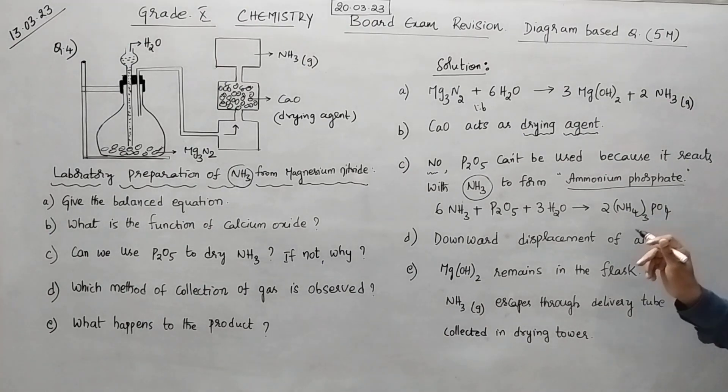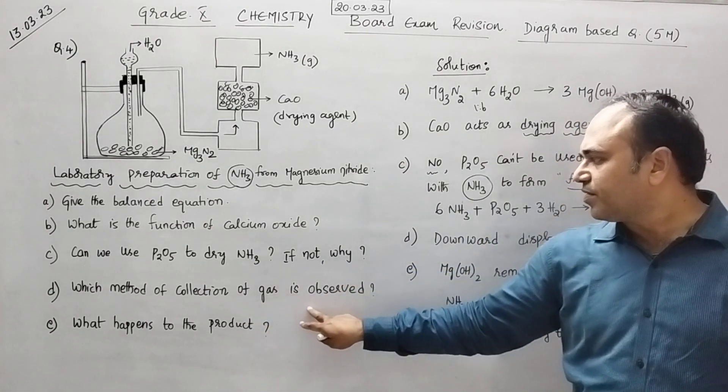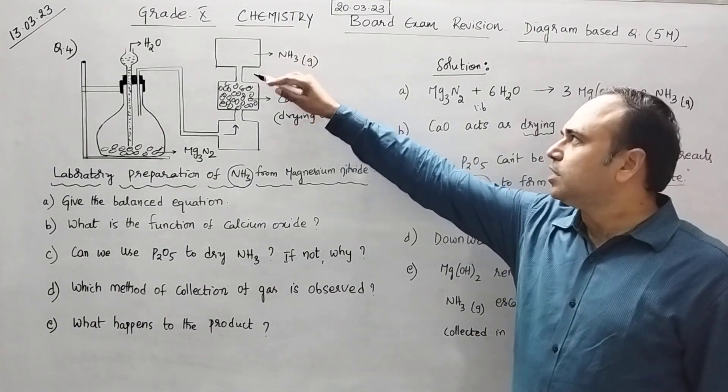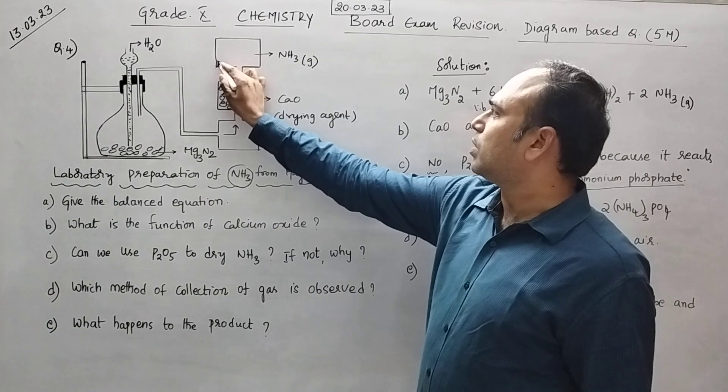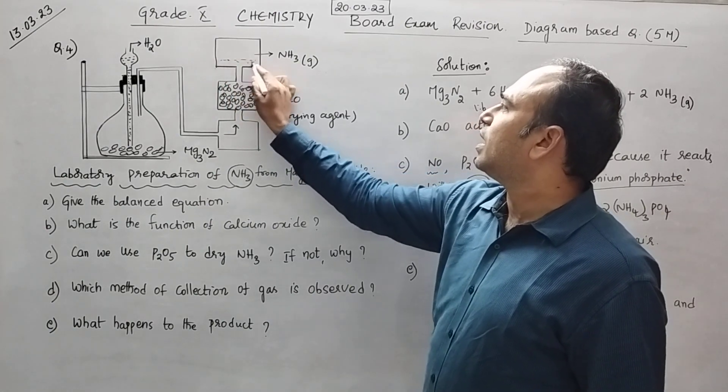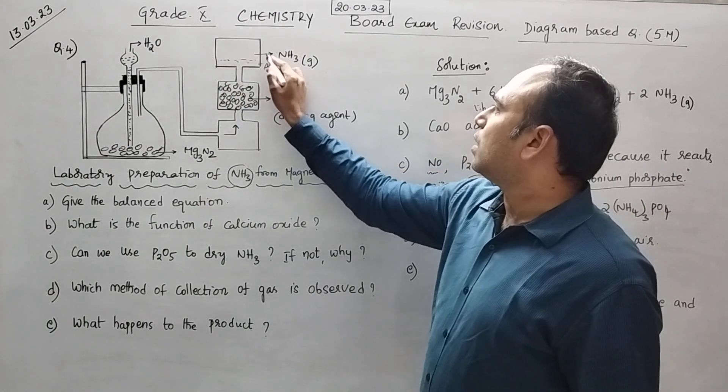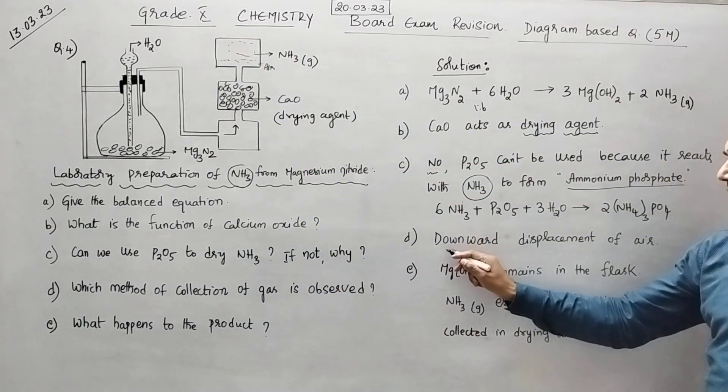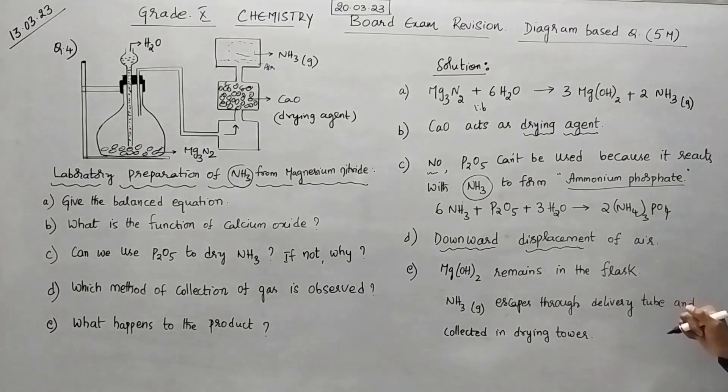Now. Next question is which method of collection of gas is observed. Here what is happening. Ammonia will be collected by downward displacement of air. So at the bottom you will be having air here. And ammonia will be collected above the air. So we call this as downward displacement of air. So it is lighter.